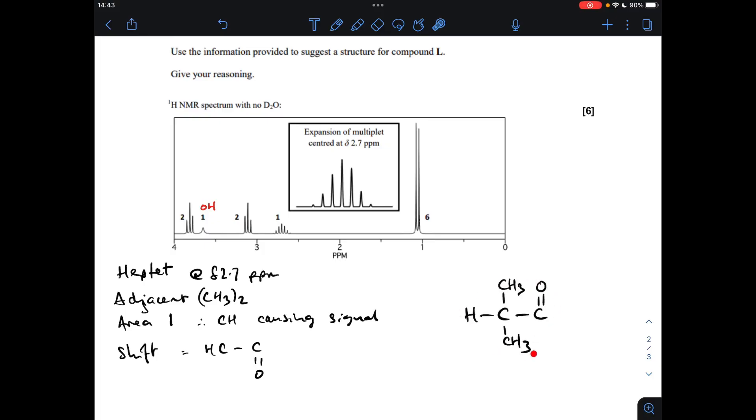Structurally that's what that would need to look like. This is the proton causing this multiplet: H to C to C double bond O environment with two adjacent CH3 groups.